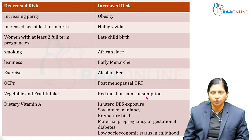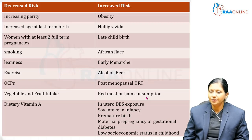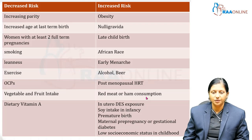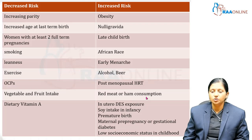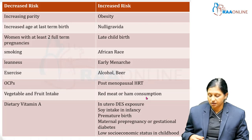Increased risk is associated with obesity, nulligravida, late childbirths, African race, early menarche, alcohol and beer intake, postmenopausal HRT, red meat or ham consumption, in utero diethylstilbestrol exposure, soya intake in infancy, premature birth, maternal pre-pregnancy or gestational diabetes, and low socioeconomic status in childhood.